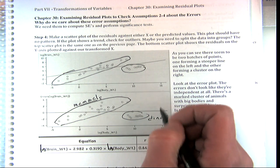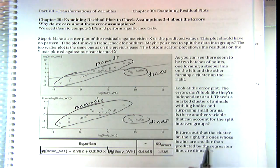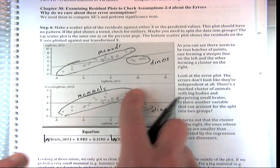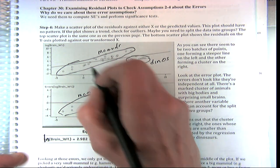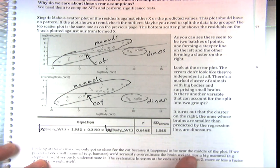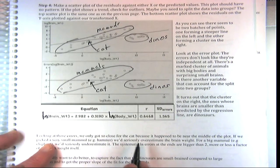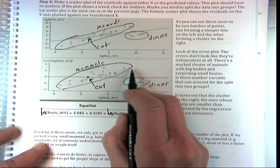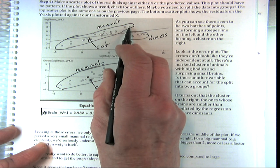We can fit two separate lines. If you look at these errors here, we got really close to the cat — remember we made a prediction for the cat and it was very close, just a tad under the line. That's the cat, because it happened to be near the middle of the plot. If we picked a very small animal like a hamster, we'd seriously overestimate the brain weight. And for big mammals like the Asian and African elephants, we're seriously underestimating — our estimate is way under the real size of their brain.